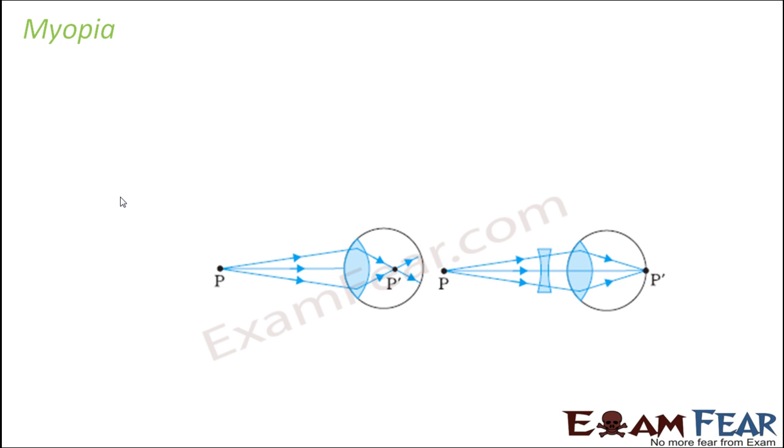Let us discuss a few of these defects. Let's talk about myopia. What is myopia? It is also termed as nearsightedness. Why is it called nearsightedness? Because in myopia people can only see nearby objects clearly.